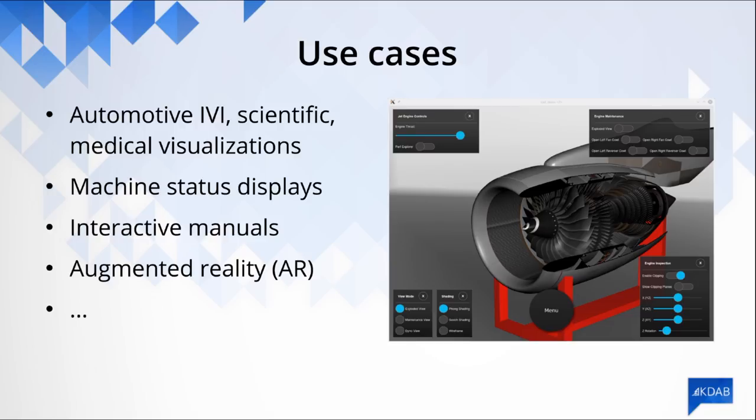The idea is to immediately visualize what part of the machine the operator needs to act upon. Or if there is a fault in the machine, what is the fault and what are the steps needed to solve it. Having a visual representation as a 3D model is much more effective than having a hard copy of a checklist. We have also been using Qt3D in games, video games, and augmented reality. It's really up to your imagination to find new use cases for 3D content these days.